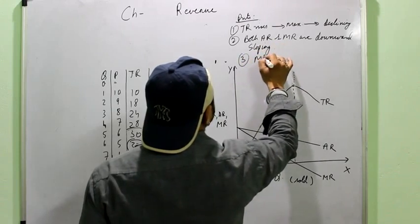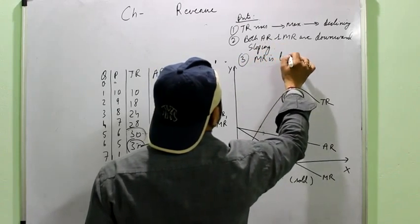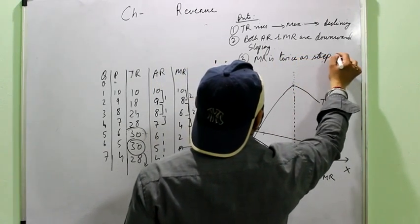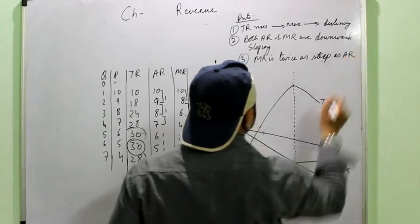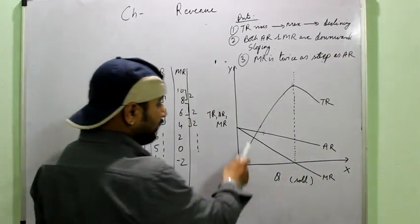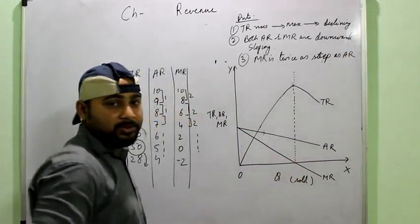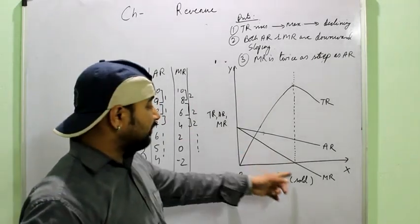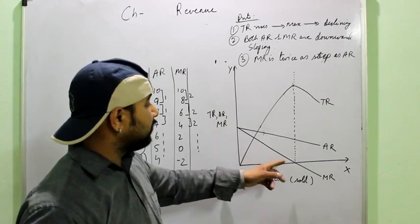Then MR is twice as steep as AR. Twice as steep means that the slope of MR is more. Okay? Because MR is declining at twice the rate of AR. So quickly it will decline. Slope is more or steepness is more.